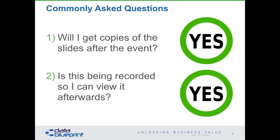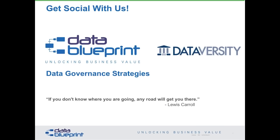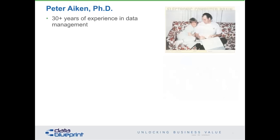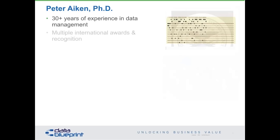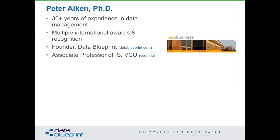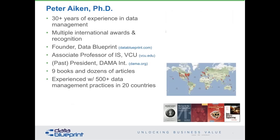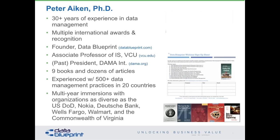Peter Aiken is an internationally recognized data management thought leader. Many of you already know him or have seen him at conferences worldwide. He has more than 30 years of experience and has received many awards for his outstanding contributions to the profession. Peter is the founding director of Data Blueprint. He has written dozens of articles and eight books; the most recent is Monetizing Data Management. Peter has experienced more than 500 data management practices in 20 countries. Some of the most important organizations in the world have sought out his and Data Blueprint's expertise, including the U.S. Department of Defense, Deutsche Bank, Nokia, Wells Fargo, the Commonwealth of Virginia, and Walmart.